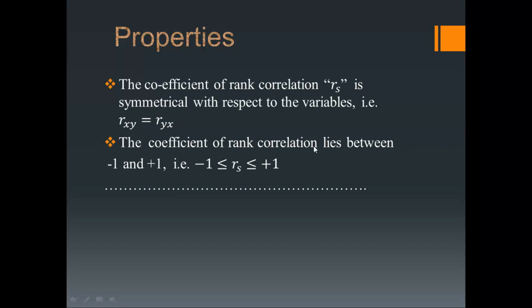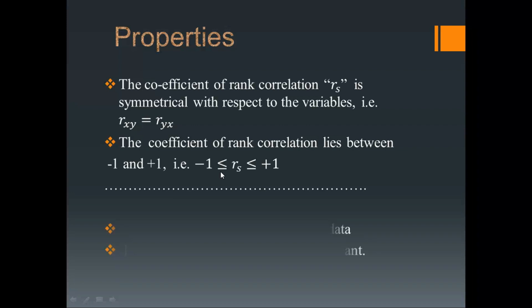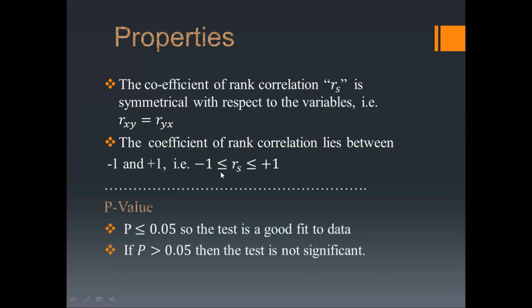The coefficient of rank correlation lies between minus 1 and plus 1 — that is, the range of rank correlation is minus 1 to plus 1. Next, we have p-values which we will use for significance testing. If the p-value is less than 0.05, we say the test is a good fit to the data.